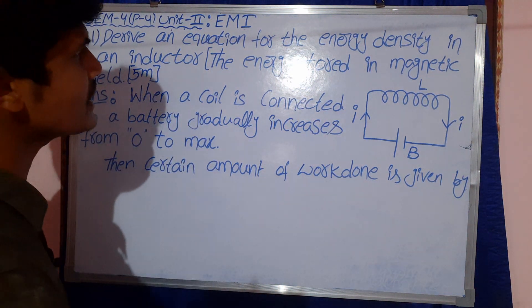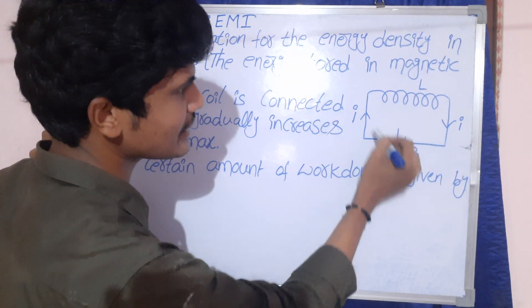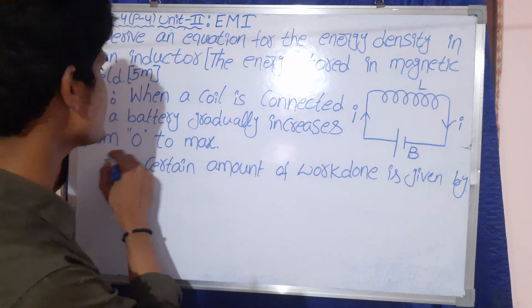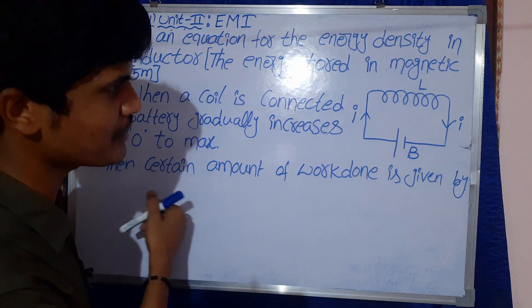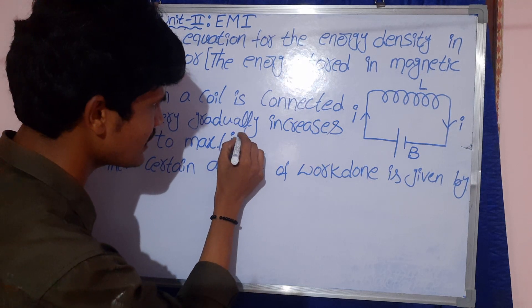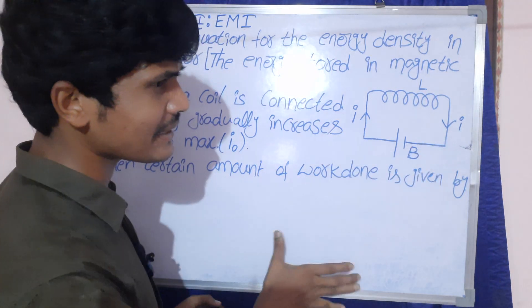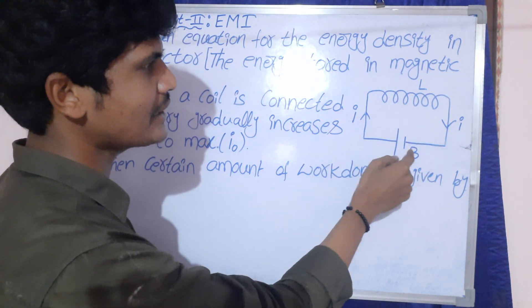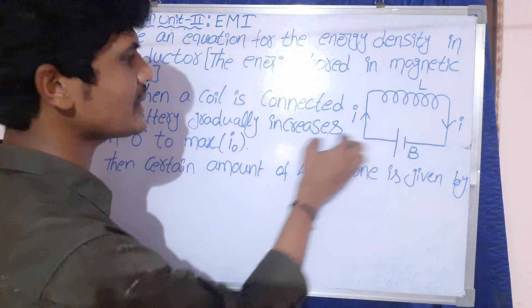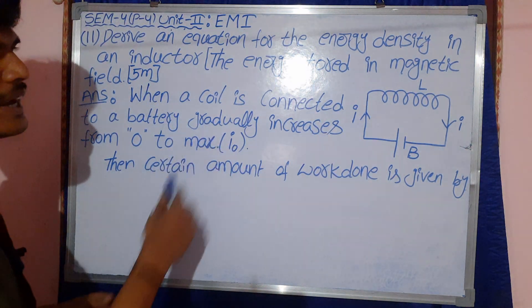When the coil is connected to the battery, the current starts to flow and increase up to a maximum current i-naught.